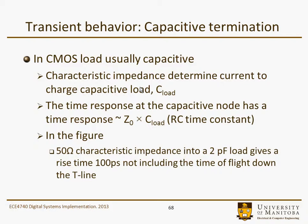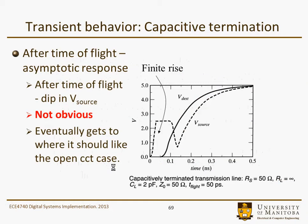Now it's complicated by the fact that we're driving that capacitor with the characteristic impedance of a transmission line. So in the following figure, we have a 50 ohm characteristic impedance driving a 2 picofarad load. That provides roughly something on the order of a 100 picosecond time constant, and that wouldn't include the time of flight for the signal to propagate down the line. So after the time of flight, we get an asymptotic response — this is the output voltage rising.